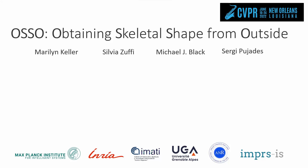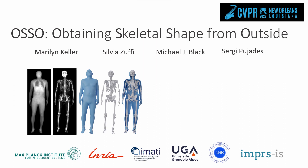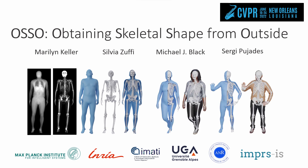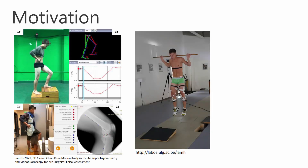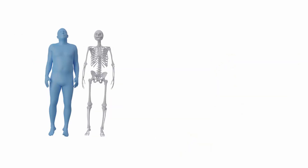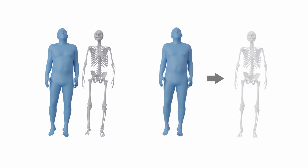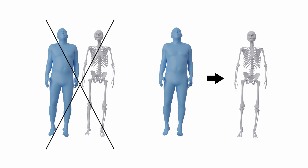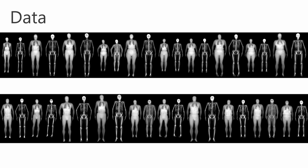We present an inference tool learned from real data to predict the skeleton inside a body shape. Human motion capture has many applications in medicine, sports science, and biomechanics. These applications typically require knowledge of the bones and how they move. With paired observations of the body surface and the internal skeleton, we could learn a mapping from the body shape to the skeleton, but no such data exists. With OSO, we make a step to address this problem.